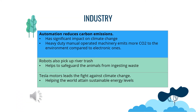I will proceed to the next area, which is the industry area. Automation reduces carbon emissions — the rising number of automated equipment has a significant impact on climate change. Heavy-duty manually operated machinery emits more carbon dioxide to the environment compared to electronic ones. Automated machines help to reduce carbon emissions by half, allowing the air to clear up. For example, robots also pick up river trash. Pollution comes in all kinds, from chemical to plastic bags. One company in Chicago has developed a trash robot that can float on water collecting garbage to keep the river clean. Robots also help to safeguard animals from ingesting waste.